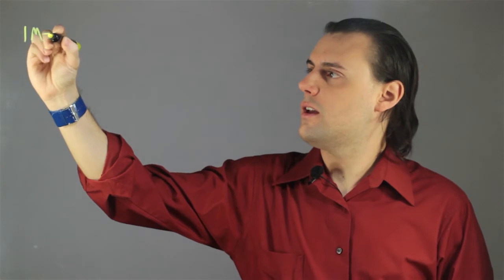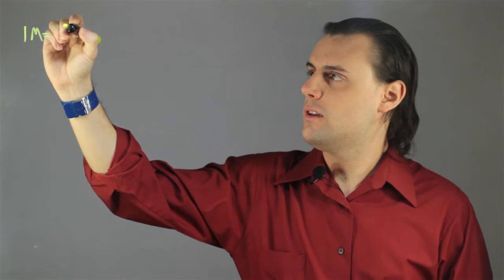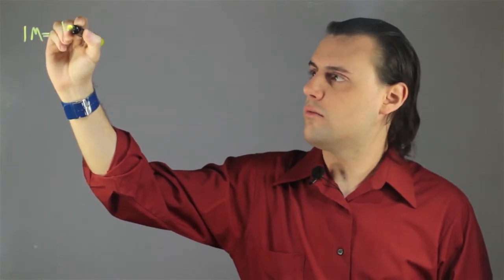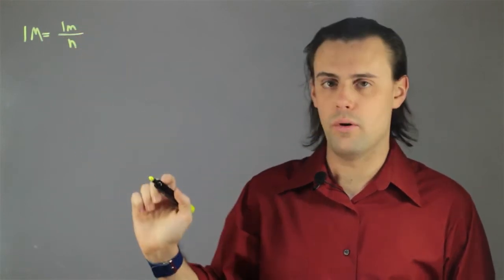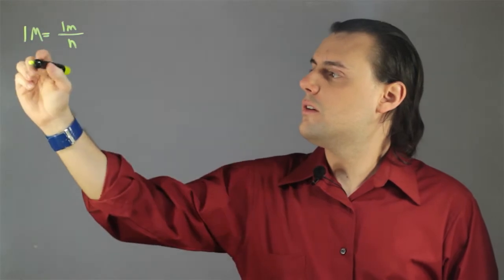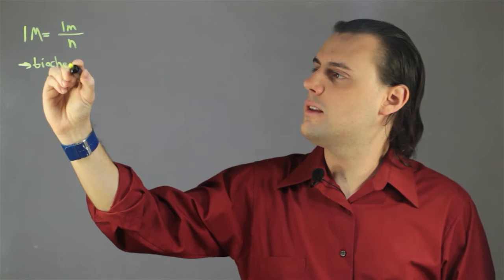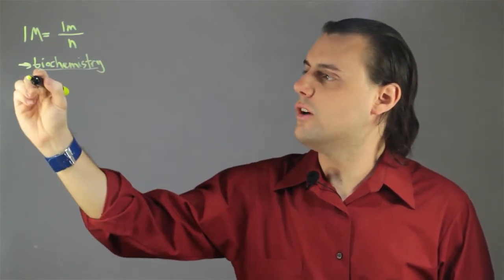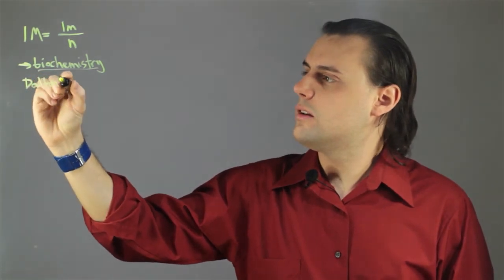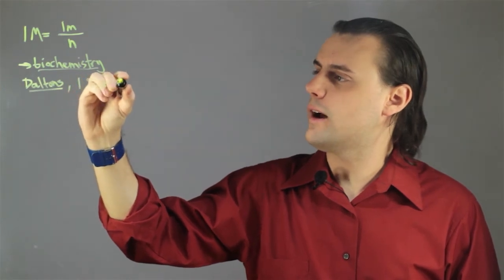Molar mass is defined in terms of a mass of your particle species. So, one molar mass is equal to one unit of mass of your species divided by the number of moles. In biochemistry, this is typically denoted in units of Daltons, in which one Dalton is equal to one gram per mole.